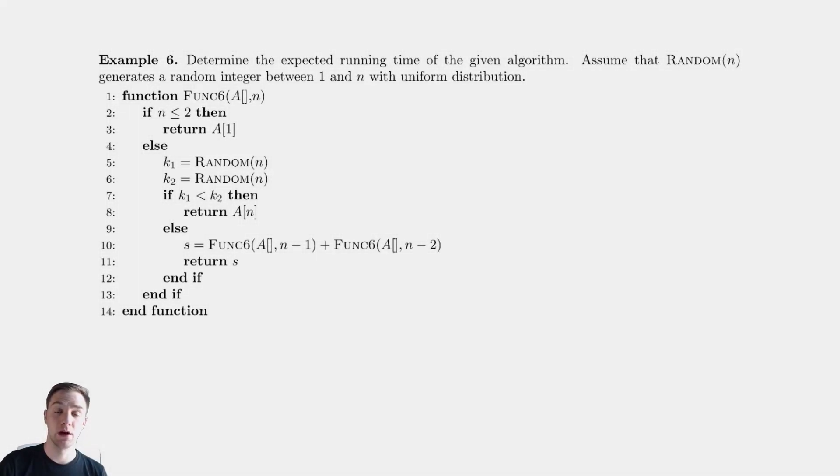In this video we're going to be continuing our analysis of randomized recursive algorithms. In this example we have something similar to before - we have a base case, we're computing two random numbers, and then if the first random number is less than the second we return A, and if not we make two recursive calls.